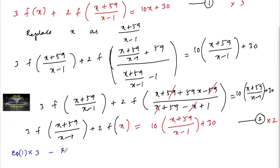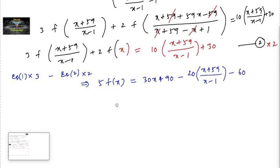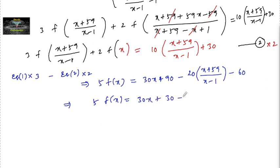So equation 1 multiplied by 3 minus equation 2 multiplied by 2, and subtract, so that you get 9 times f of x minus 4 times f of x, which is 5 times f of x, and the 6 times f of (x + 59)/(x − 1) terms cancel. This equals 30x + 90 minus 20 times (x + 59)/(x − 1) minus 60, simplifying to 5 times f of x equals 30x + 30 minus 20 times (x + 59)/(x − 1).